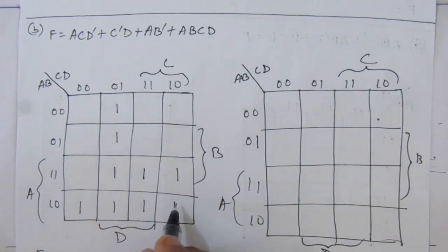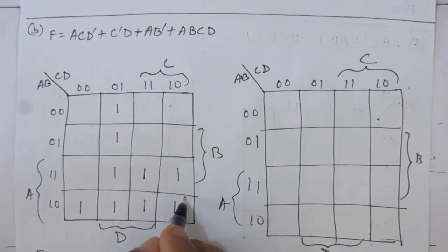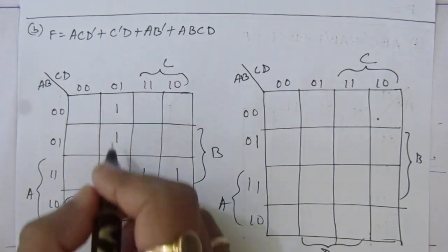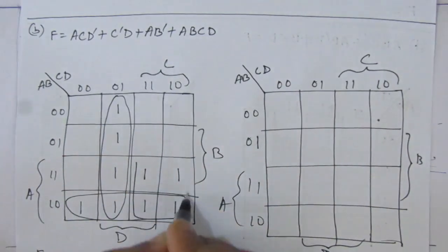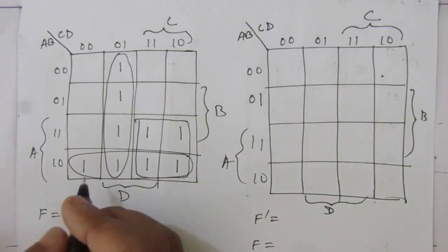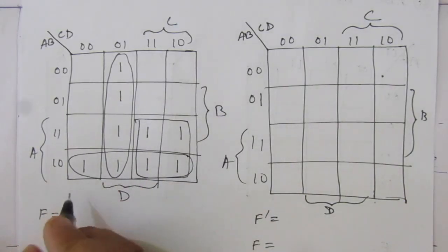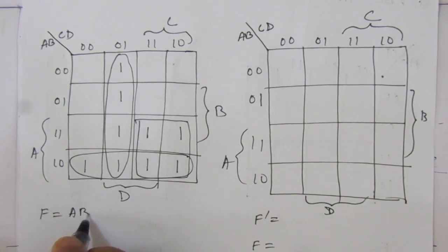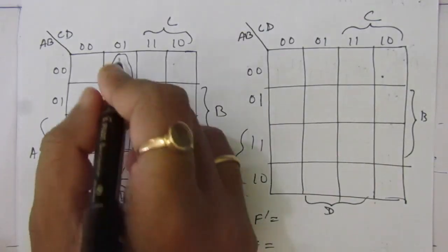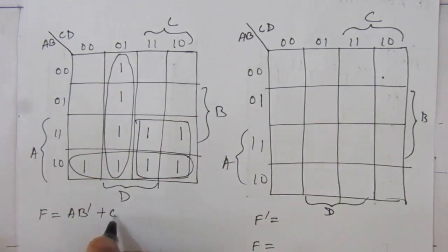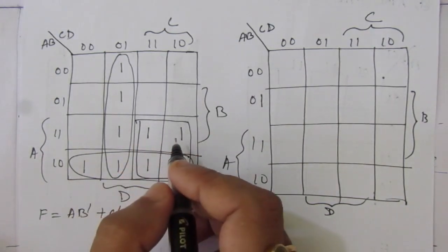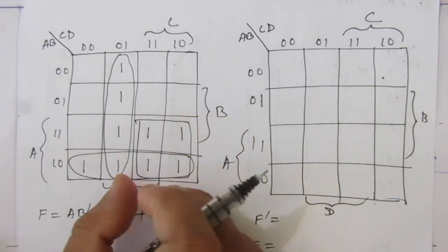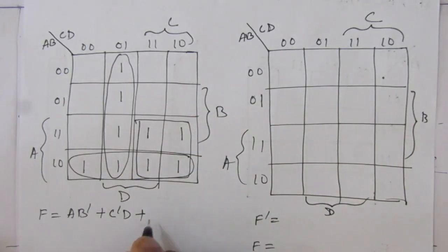Now let us see how we can combine. This will be one term, this will be another term, and this will be the third term. From this row grouping we get a b-bar; from this column grouping we get c-bar d; and from this combination we get a c. So the simplified sum of product expression is: a b-bar + c-bar d + a c.